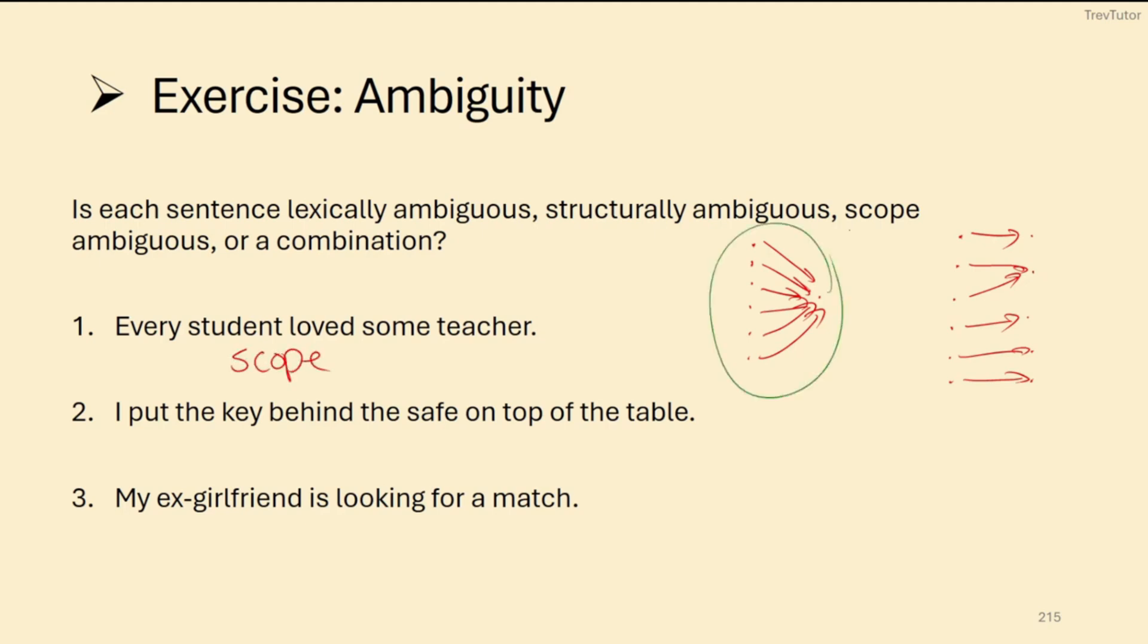If you can draw a little diagram like this, with two different interpretations of how the arrows go, you're looking at scope ambiguity.